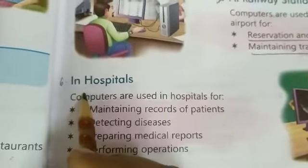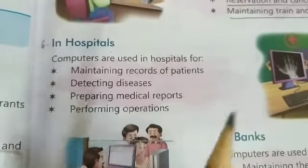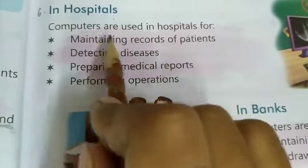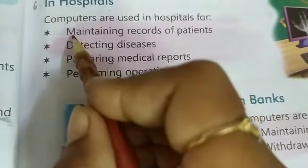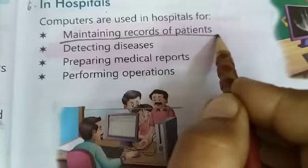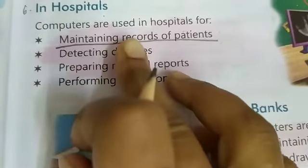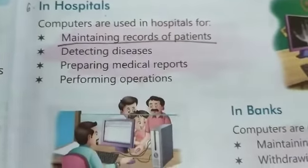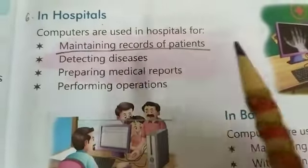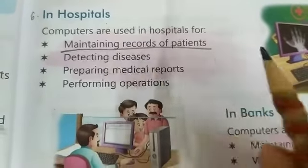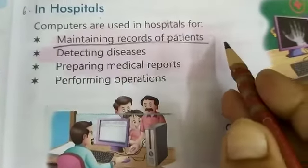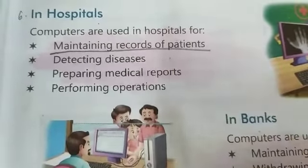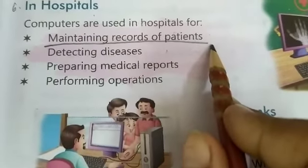Sixth point kya hai? In hospital. Hospital mein kya use hota hai. Computers are used in hospitals for — first: maintaining records of patients. Jo marij hote hain unke records ko maintain kiya jata hai. Records mein kya hota hai? Unka naam, unki age, unka address, unka mobile number, unhe konsi bimari hai, unka treatment kya chal raha hai, unki dawa konsi lag rahi hai, unka total bill kitna ban raha hai — yeh sari chizein usmein detail mein hoti hain.